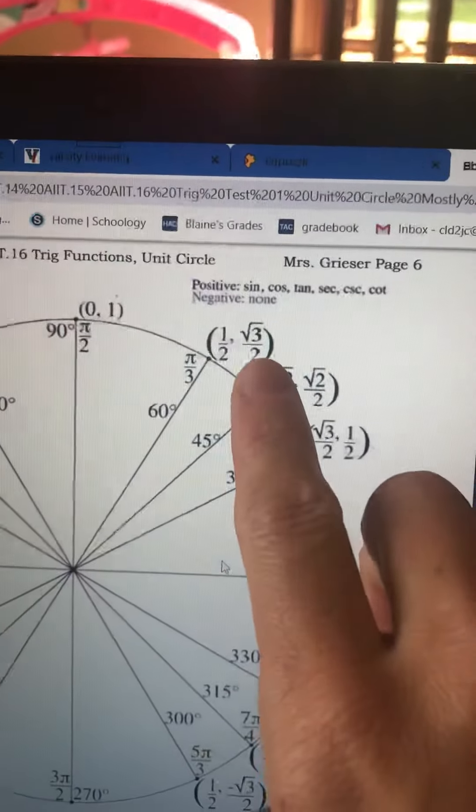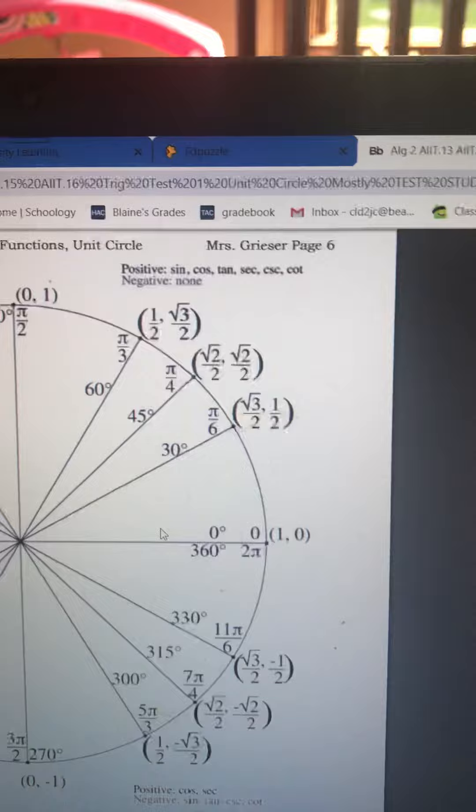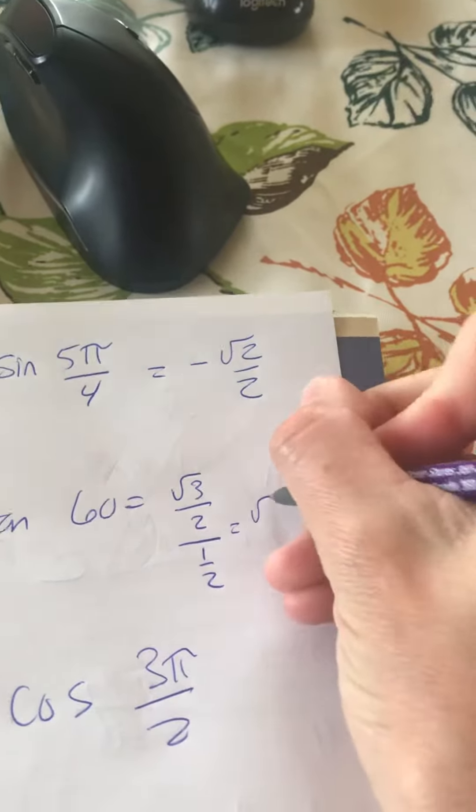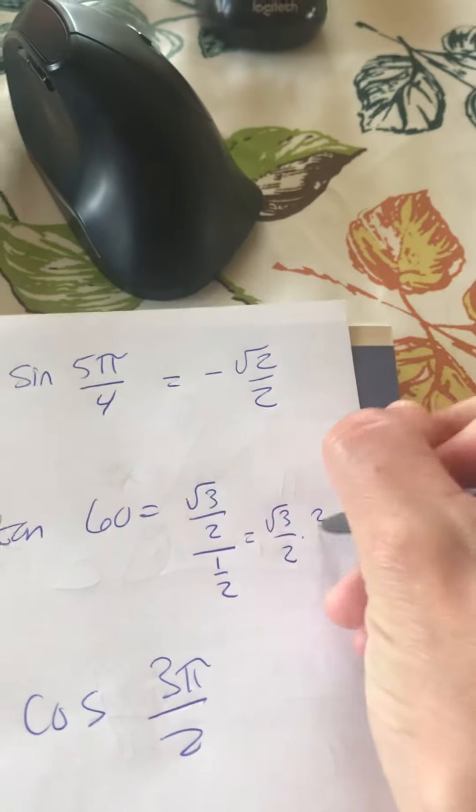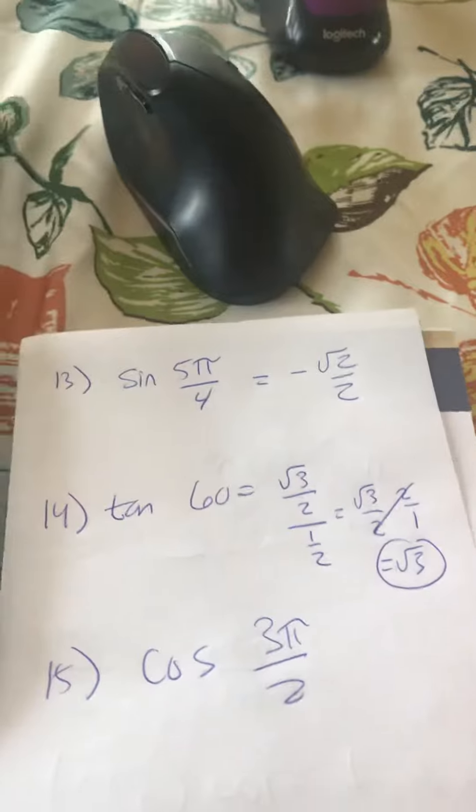Tangent of 60 degrees - we're going to go to 60. We want the y value divided by the x value. So radical 3 over 2 over 1 half. Now that's a little bit harder. When dividing fractions, you multiply by the reciprocal. Like that. Cancel. So it's going to be radical 3. That's the answer to number 14.